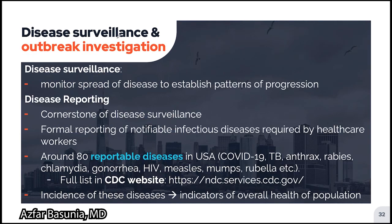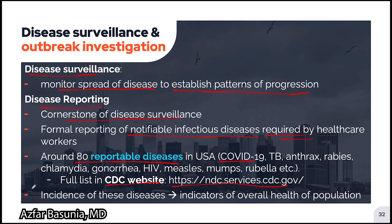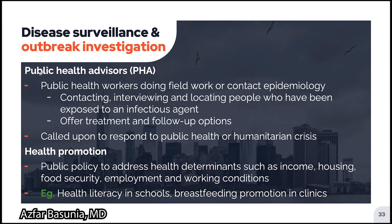Moving right along to disease surveillance and outbreak investigation. Disease surveillance refers to monitoring the spread of a disease to establish patterns of progression. Disease reporting is a cornerstone of surveillance, with formal reporting of notifiable infectious diseases required by healthcare workers. There are around 80 reportable diseases in the United States, including COVID-19, tuberculosis, anthrax, rabies, chlamydia, gonorrhea, HIV, measles, mumps, and rubella. From a public health perspective, the incidence of these diseases can be a marker of the overall health of the population. Public health advisors are field workers who contact, interview, and locate people potentially exposed to an infectious agent, and offer treatment and follow-up options.